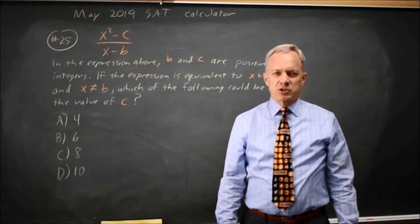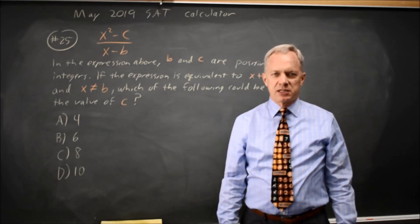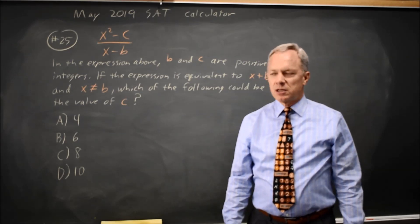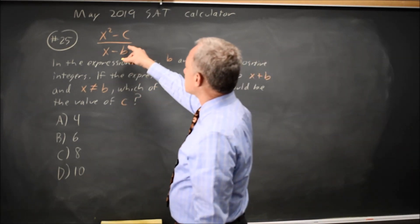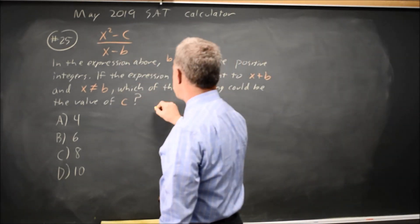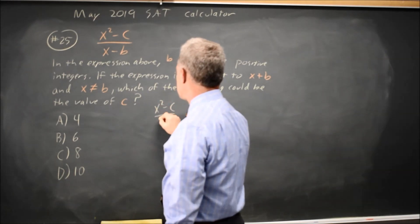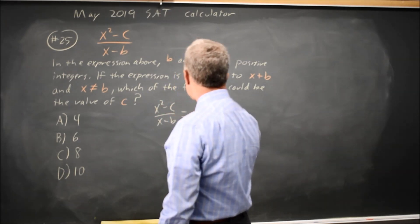This is calculator question number 25 from the May 2019 International Exam. The College Board asks us about the rational expression x squared minus c over x minus b, and they tell us that's equal to x plus b.